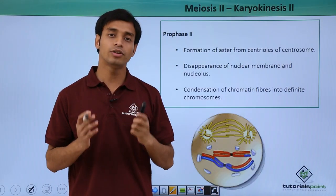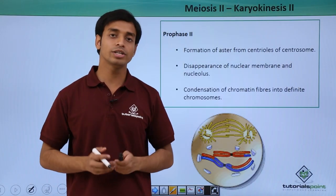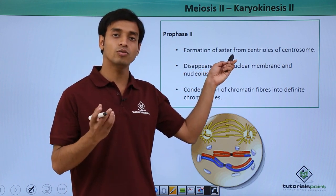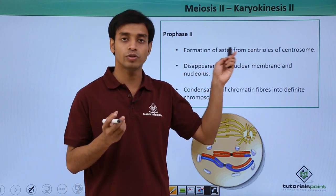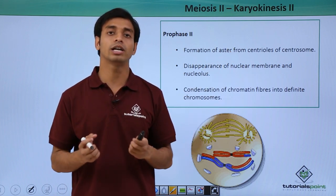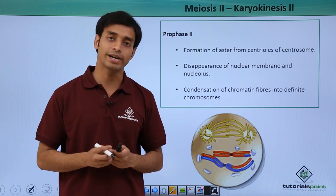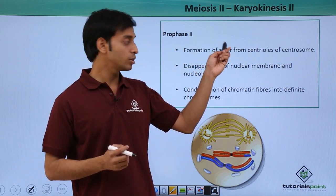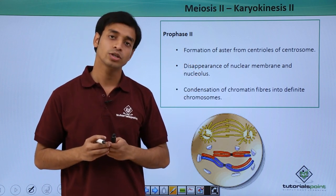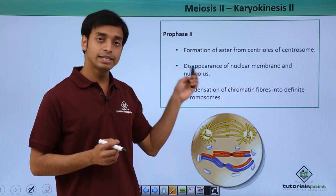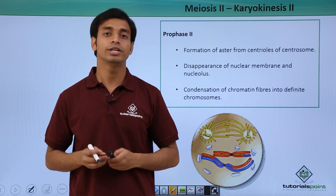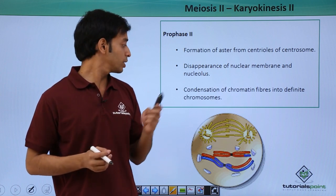The first phase is Prophase 2. Prophase 2 involves the formation of asters. From the centrioles, microtubular protein structures are formed which are going to help in the segregation of the sister chromatids or the chromosomes. These asters are formed and are going to attach with the centromere position of the chromosomes. There is also the disappearance of the nuclear membrane and the nucleolus.